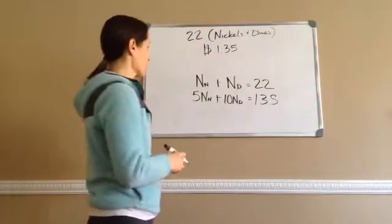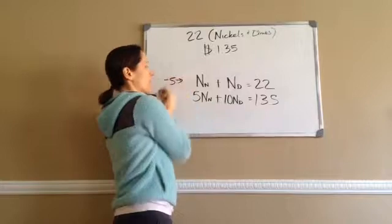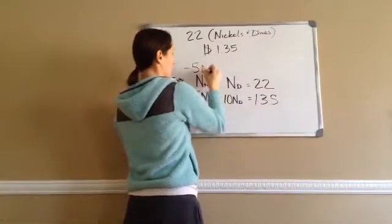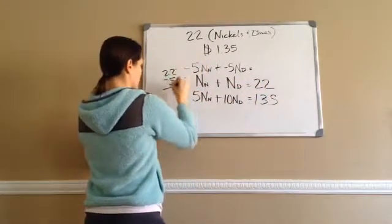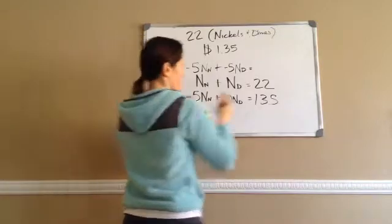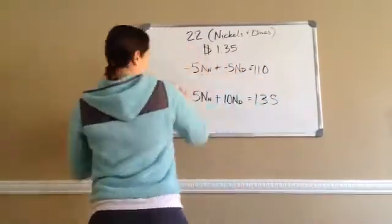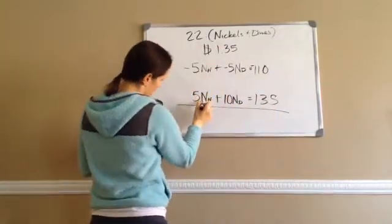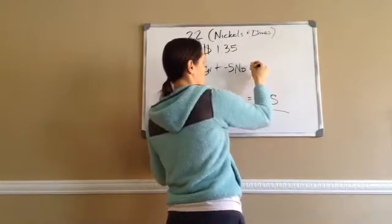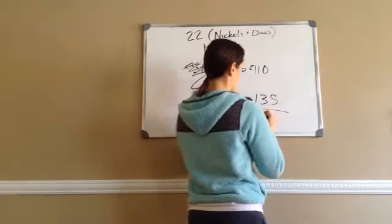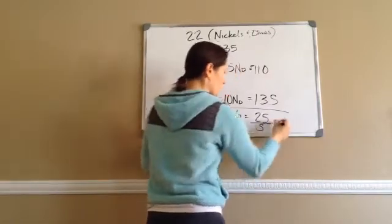This time they want us to use the elimination method. I would multiply by negative 5. Negative 5 times all of that: negative 5NN plus negative 5ND equals negative 110. Now on the elimination method, you add. So negative 5NN and positive 5NN erase each other. Negative 5ND plus 10ND becomes 5ND. And negative 110 plus 135 equals 25. So 5 times what equals 25? Divide by 5 — ND equals 5.